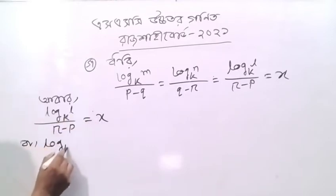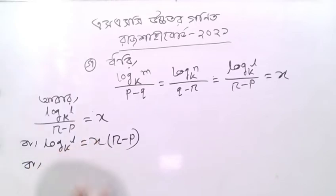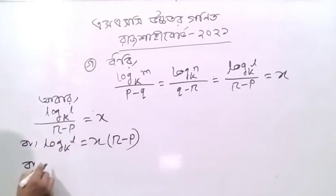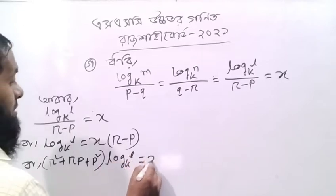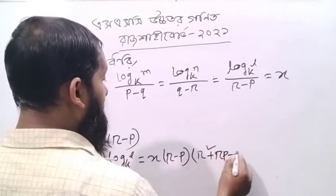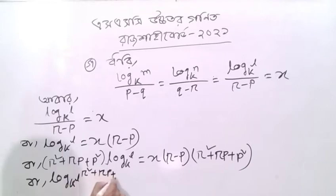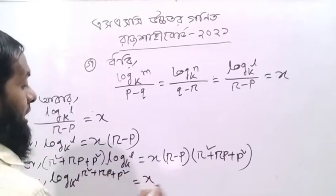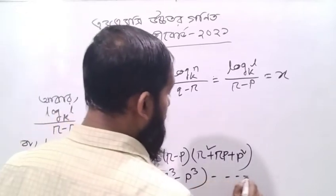Log k plus equals x into r minus p. Log k with x into r minus p. r squared plus rp plus p squared. Log k — r squared plus rp plus p squared equal to x, r cubed minus equation, minus r cubed minus p squared.